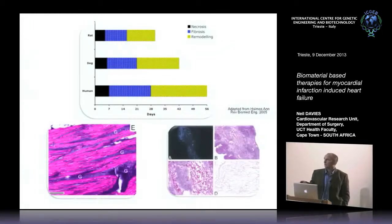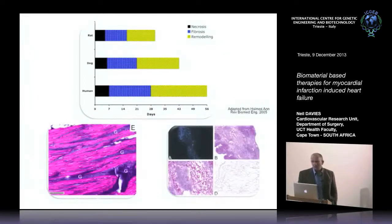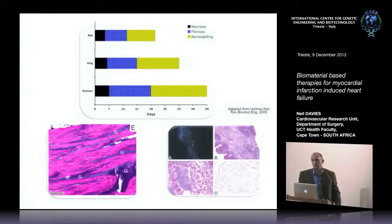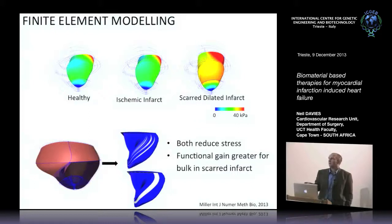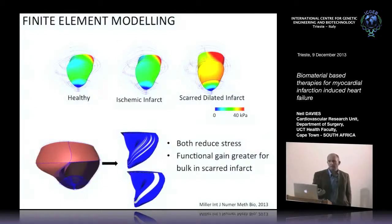Looking back in the literature, we can see this same pattern — immediate injection from Bob Langer's group shows the streak, while fibrin injected at one week forms a blob. Why we see functional improvement is partly down to degradability, though we're not sure that's the only reason. We have a finite element modeling project with mechanical engineers, and very preliminary models show that both layered and bulk patterns reduce stress, but there is a greater functional gain with bulk injection.